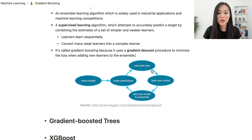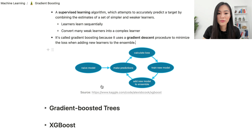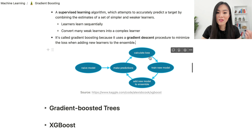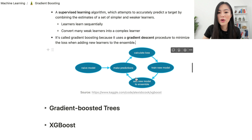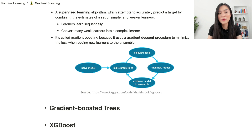It's called gradient boosting because it uses a gradient descent procedure to minimize the loss when adding new learners to the ensemble. Here's a diagram showing how it works: we start with a naive or simple model, use it to make predictions, calculate the loss based on the loss function, then train a new model based on that loss, and add it to the ensemble. It's an iterative, sequential process — we keep adding new models and the predictions improve.